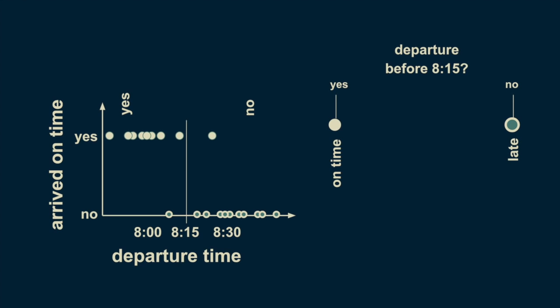If you depart before 8:15, you can be reasonably sure of getting to work on time, and if you depart after 8:15, you can be reasonably sure of being late. This is the simplest decision tree possible, a single branch.